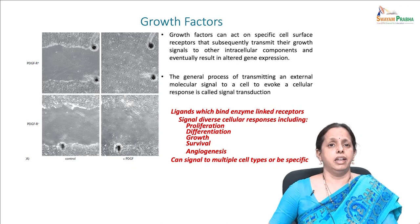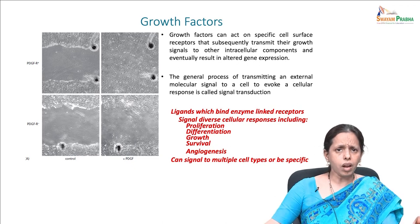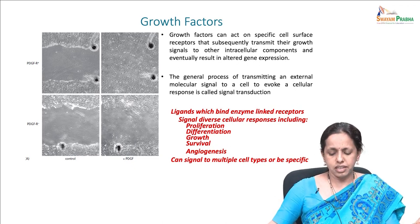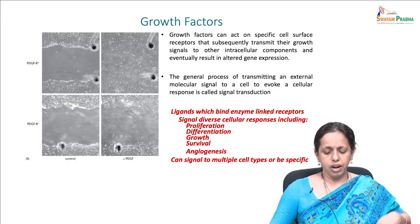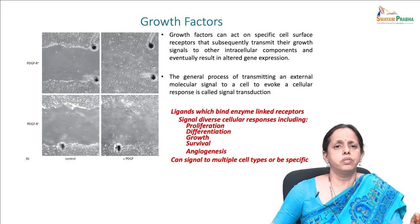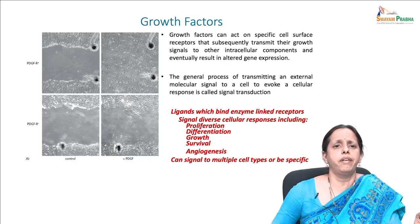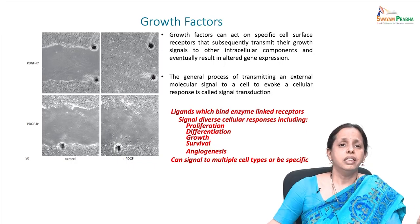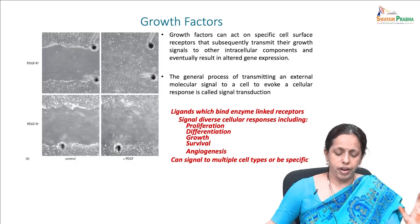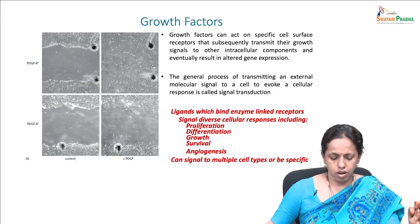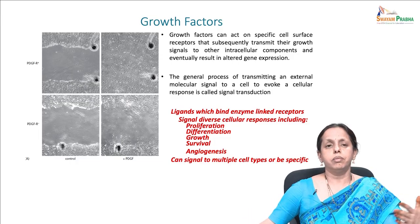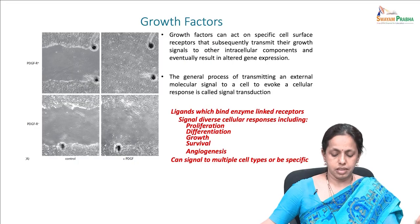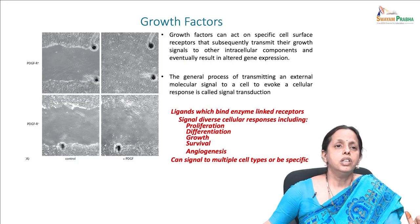This happens via receptor and growth factor receptor binding — usually enzyme-linked receptor ligands. Several driven cellular responses including proliferation, differentiation, growth, survival, and angiogenesis all happen via this growth factor receptor signaling. Growth factors can signal to multiple cell types. For example, the platelet-derived growth factor is shown in a simple scratch experiment done in cell culture, where cells are grown in a monolayer and a scratch is made with a tip.